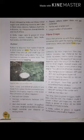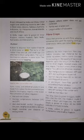Rubber plantations are found in the tropical regions of the world. The cultivation of rubber requires a hot and wet climate, average temperature between 25 and 35 degrees Celsius, well-distributed rainfall throughout the year ranging from about 200 to 300 centimeters, bright sunshine and absence of strong winds, and slopes where water does not collect.